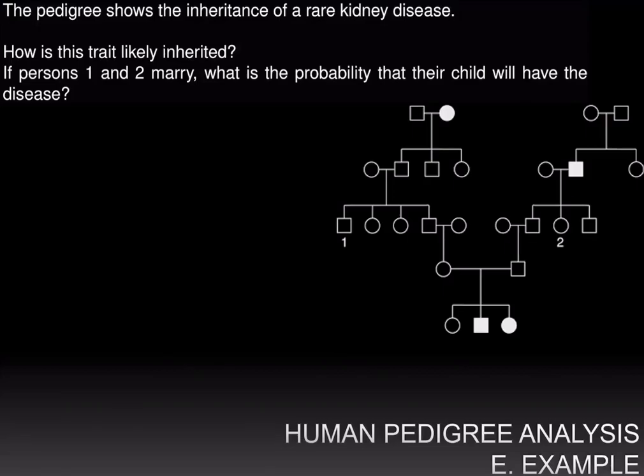The pedigree shows the inheritance of a rare kidney disease. How is this trait likely inherited? If persons one and two marry, what is the probability that their child will have the disease?